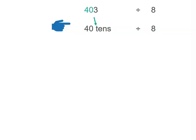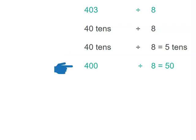I'm going to rename 400, my first chunk, as 40 tens. 40 tens divided by 8—well, I know that 40 divided by 8 equals 5. So 40 tens divided by 8 equals 5 tens. Let's rename that now as 400 divided by 8 equals 50.